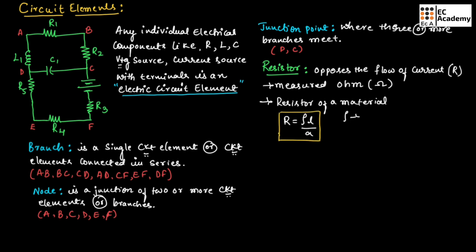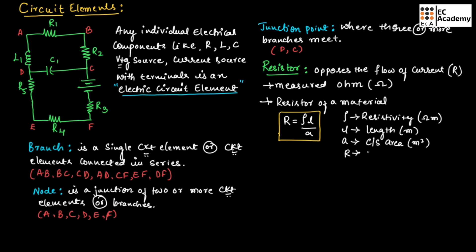Here, rho represents resistivity in terms of Ohm-meter, L represents length in terms of meter, A represents cross-sectional area of the material in terms of meter square, and R represents resistance in terms of Ohm.